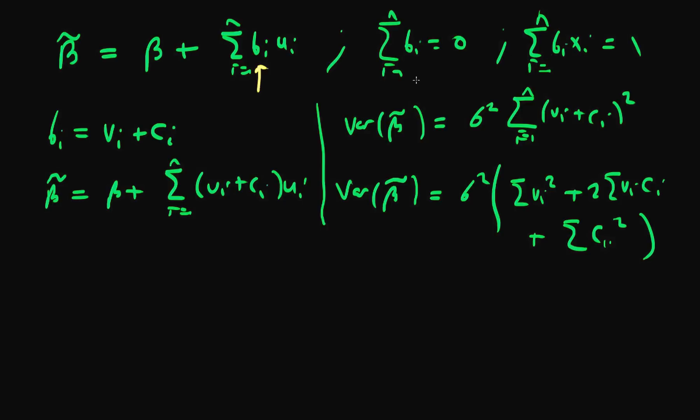We know from the condition for beta tilde to be unbiased that the sum of bi equals 0. We can use that to simplify our variance expression. So the sum of bi equal to 0 is the same as the sum of vi plus ci equal to 0.